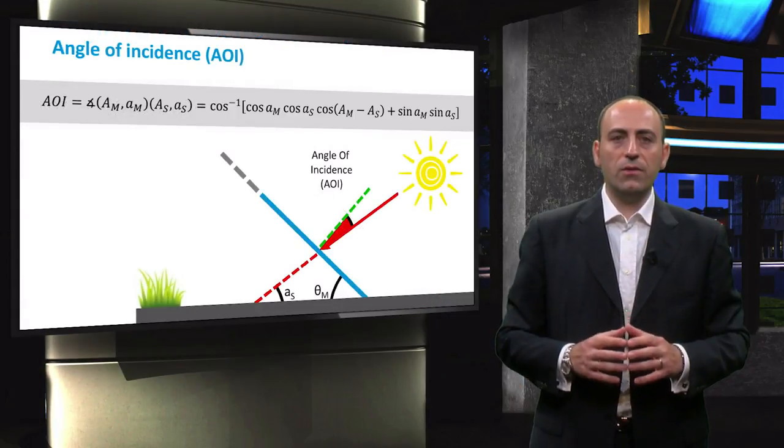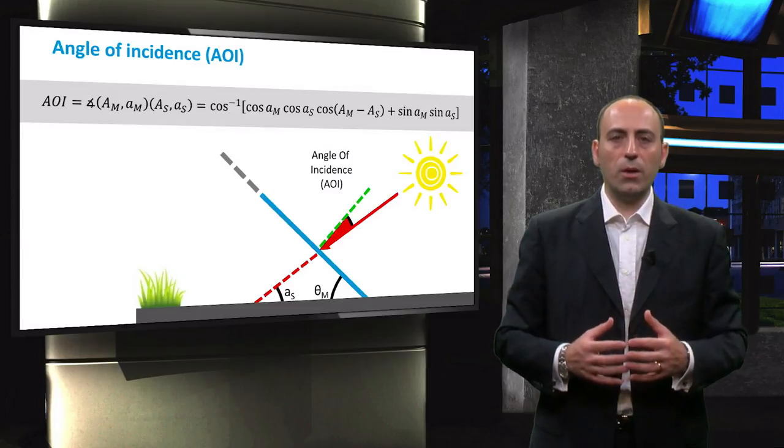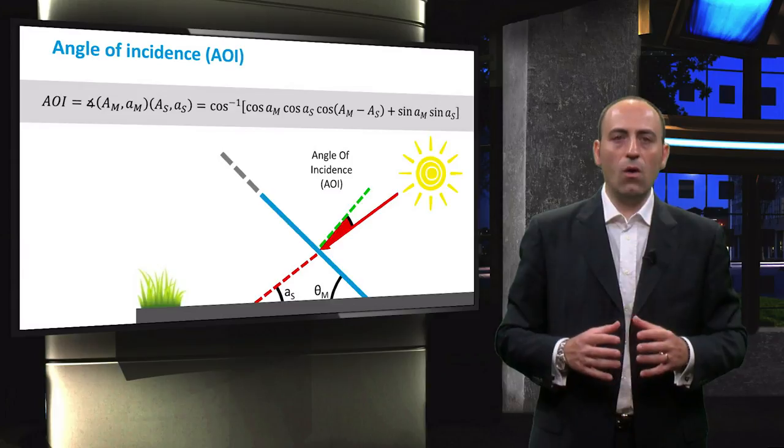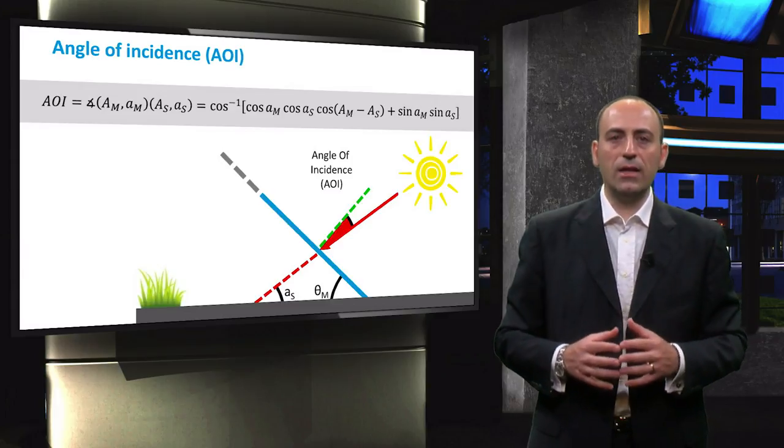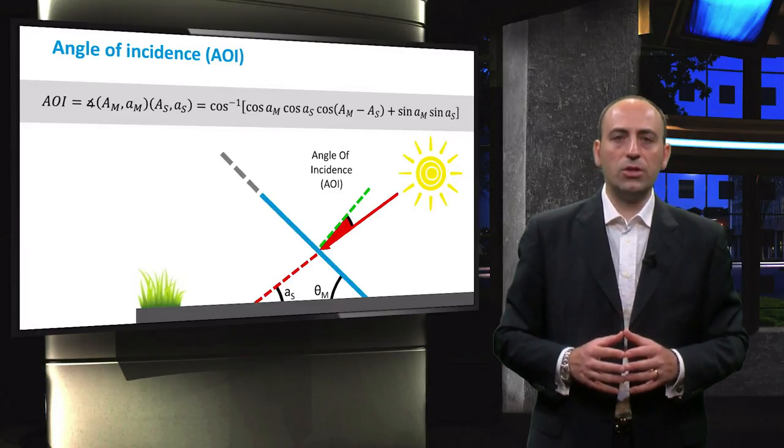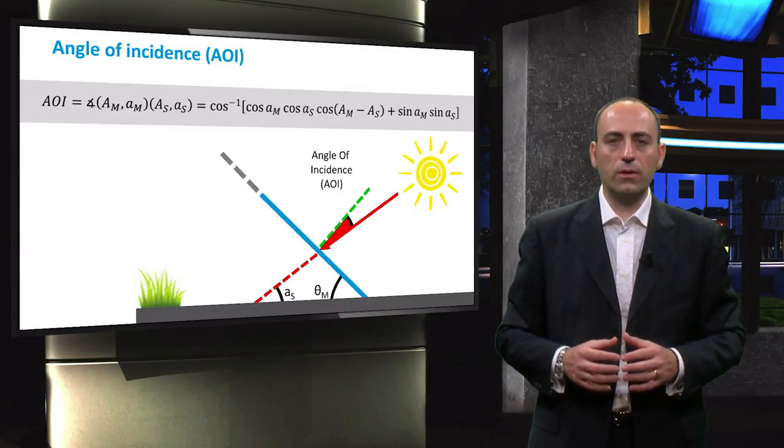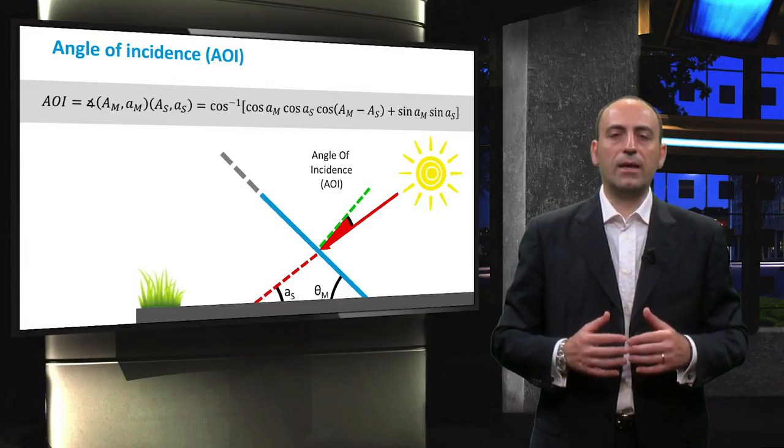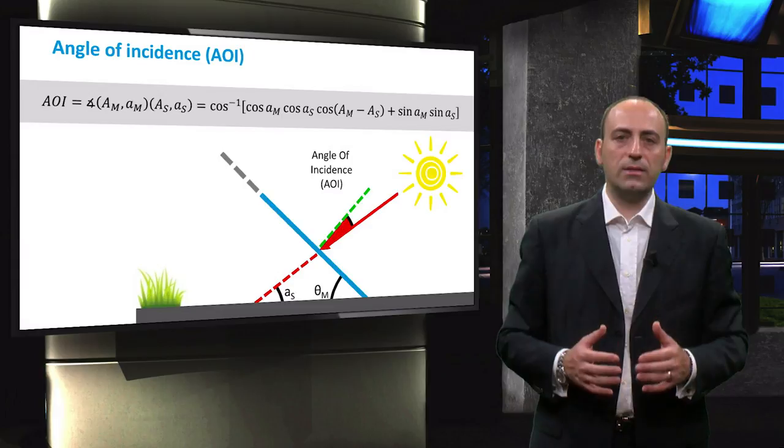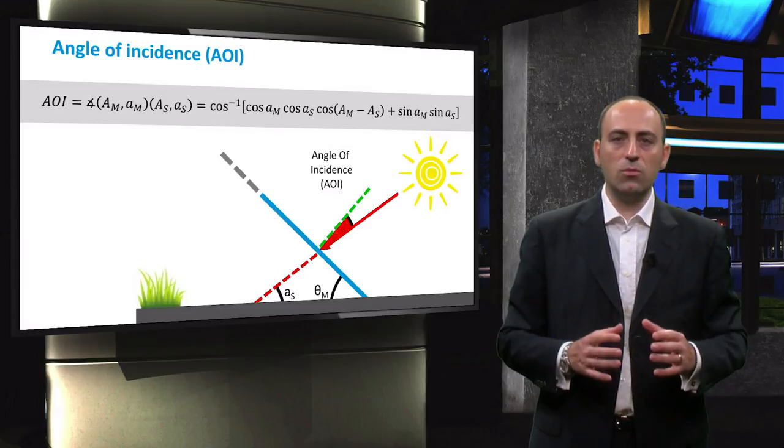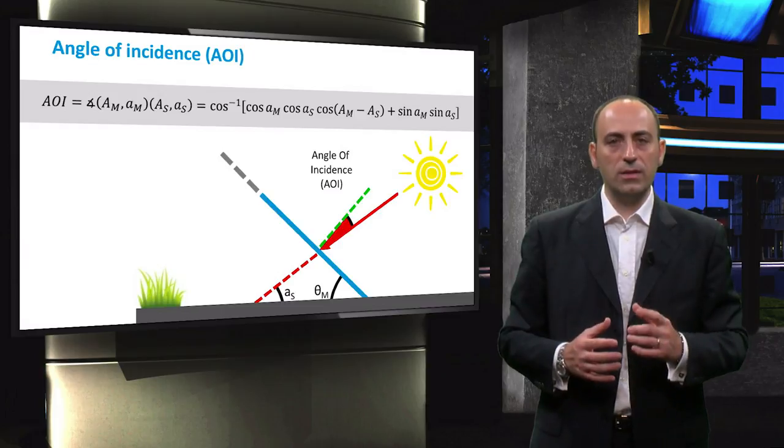In the top of the slide, you can find the trigonometrical equation used to derive the angle of incidence. You can see that it is only a function of the azimuth and altitude of the module normal and the Sun position. The derivation of this equation can be found in the solar energy book. It is important to realize that this is drawing in a two dimension. This means that the angle of incidence highlighted in red is true only in case the azimuth of the module corresponds to the azimuth of the Sun.